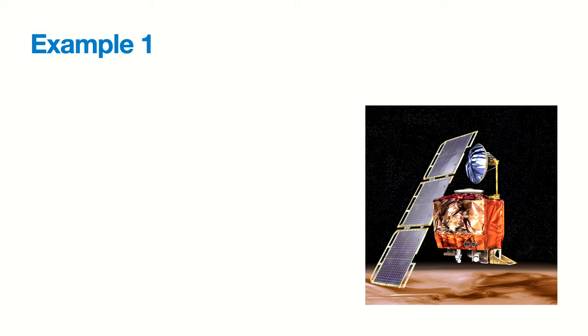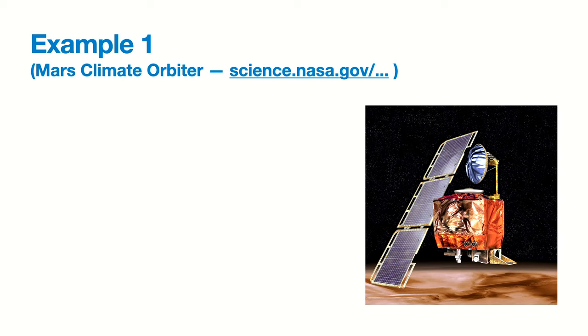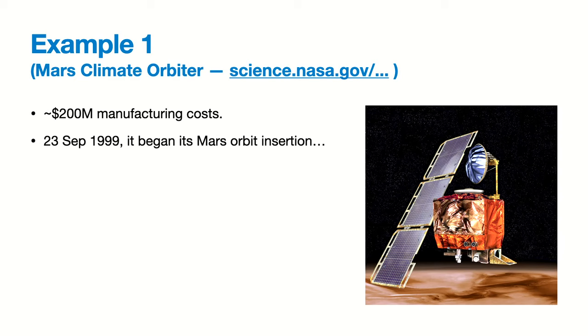Why do we care about secure and reliable software? I have two illustrative examples. The first: does anyone recognize this? This is — or rather was — the Mars Climate Orbiter. There's a whole page on the NASA.gov domain about it. This was a rather expensive thing — $200 million manufacturing costs alone, and the whole project cost around half a billion. It was supposed to study the climate history of Mars and look for water, answering lots of really important scientific questions.